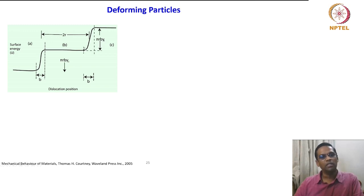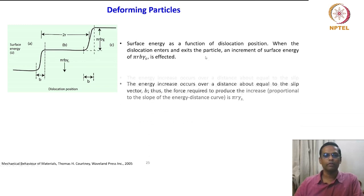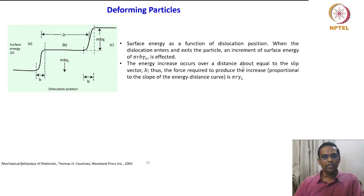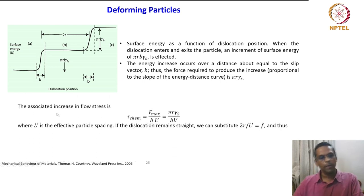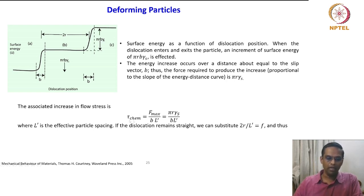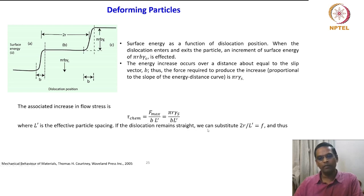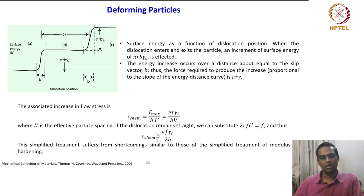The schematic shows that the surface energy increases when the dislocation enters the particle creating the first offset, reaching π·r·b·γ_s. It travels inside and again on exit creates another surface increment of π·r·b·γ_s, over 2R — the full diameter of the particle. The associated increase in flow stress is tau_chemical equal to F_max / (b·L_prime), which is π·r·γ_s / (b·L_prime). Substituting 2r / L_prime equal to F, this becomes tau_chemical approximately equal to π·F·γ_s / (2b).